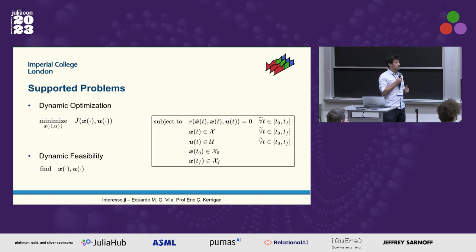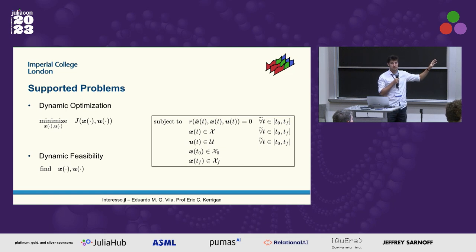So this is the problem formulation here. If you want to do dynamic optimization, you have a certain cost but you can also just do the dynamic feasibility if you just want to see if something is feasible.